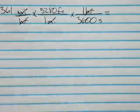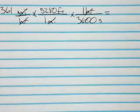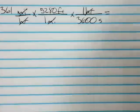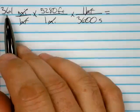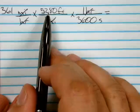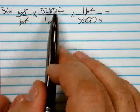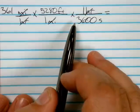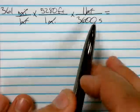Yep, so now I want you to grab your calculator and just do it exactly, do it with me. Type 361 times 5280 divided by 3600.